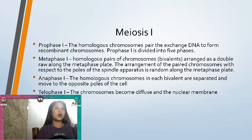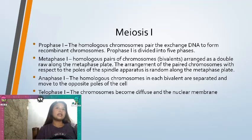Anaphase: the homologous chromosomes in each bivalent are separated and moved to the opposite poles of the cell. Telophase I: the chromosomes become diffuse and the nuclear membrane reforms.